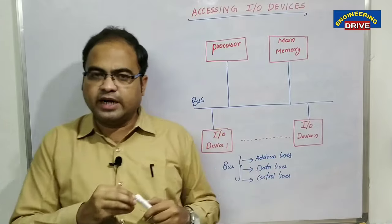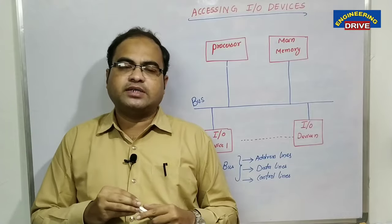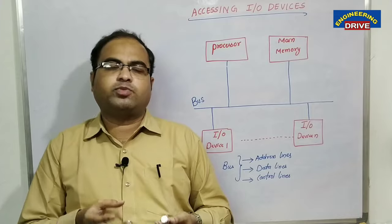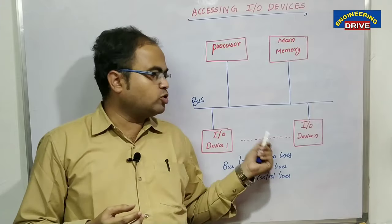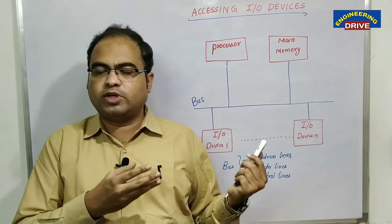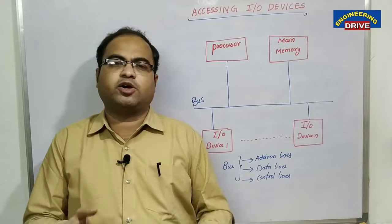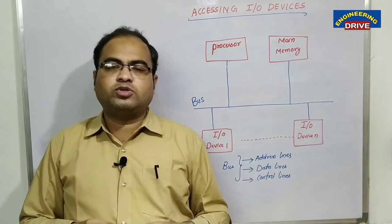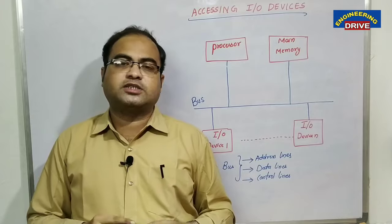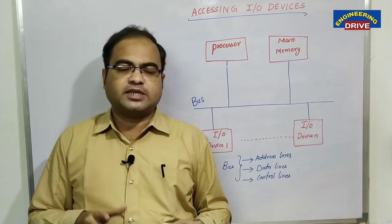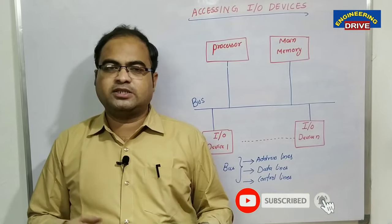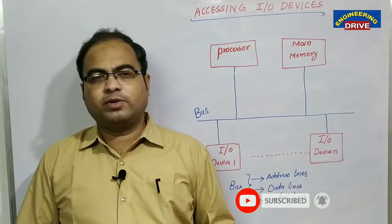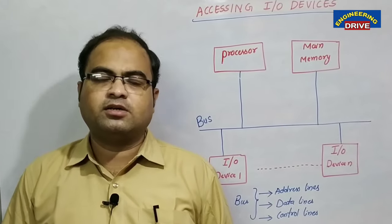With the help of these three lines, the input output devices can be accessed by our computer, and those input output devices can give as many operations as possible to ensure the entire stability of our system. Hopefully the concept of how our computer system accesses input output devices has been clear to you. With this, let me close today's session. See you soon everybody. Take care of your health.